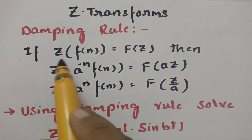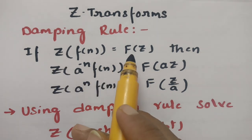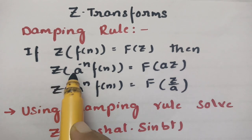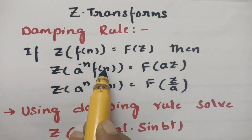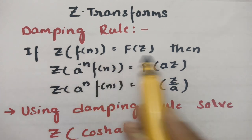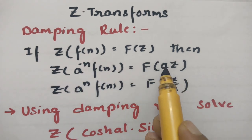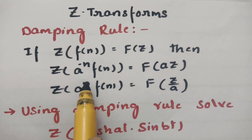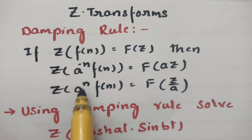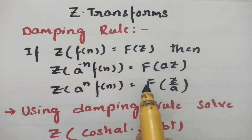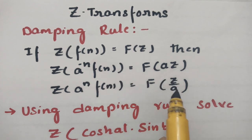Here is the definition: if Z of f(n) is equal to capital F of Z, then Z of a power minus n into f(n) — if f(n) is multiplied with a power minus n — then the answer will be capital F of a into z. So a is multiplied with Z. And next, Z of a power n into f(n): if a power n is multiplied with f(n), the answer is capital F of Z by a.